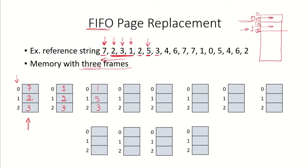The next reference is for page 3, which is already in memory — so this is a hit. The next reference is for page 4. Looking at pages 1, 5, and 3: page 3 was brought in first (before 5 and 1 in order), so page 3 will be replaced. Page 4 is put in place of page 3, and the memory becomes pages 1, 5, and 4. Page 4 caused a page fault.